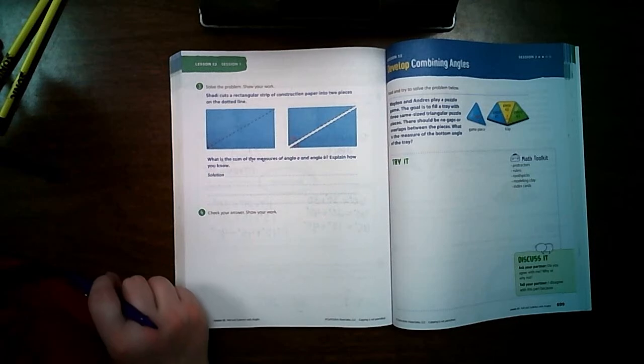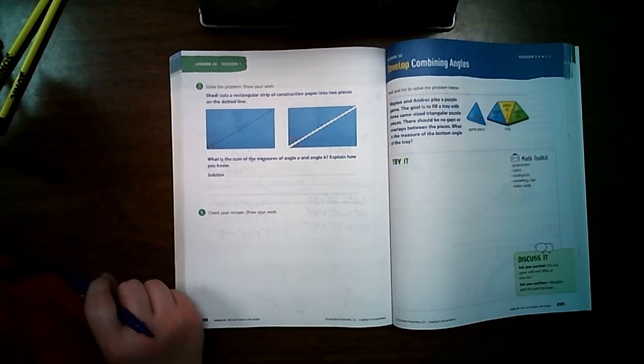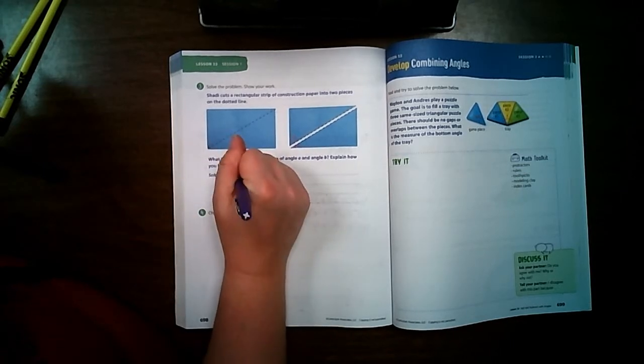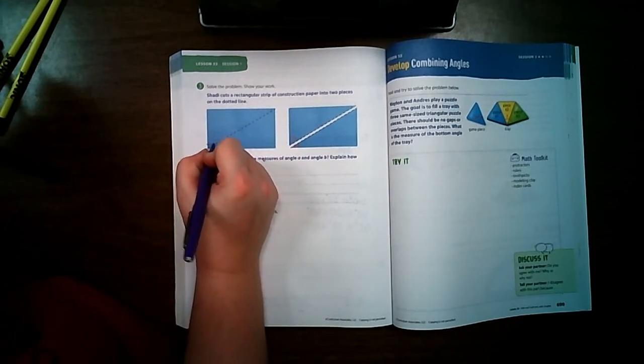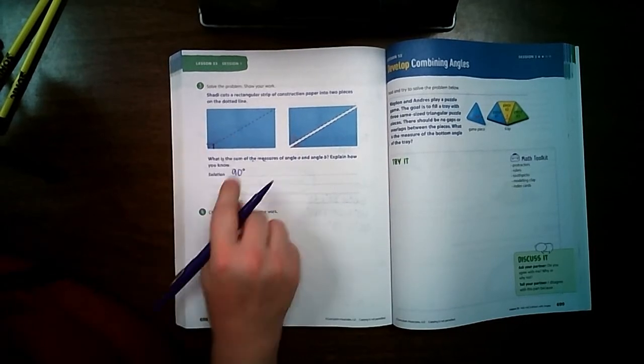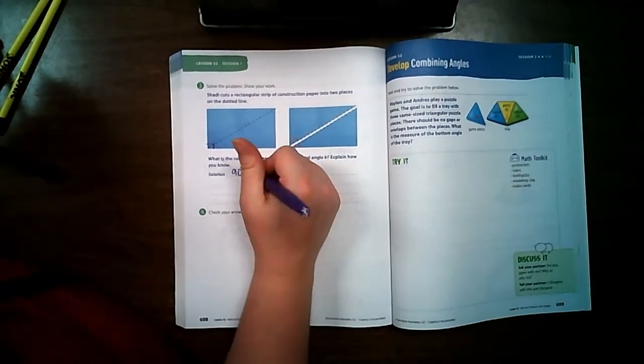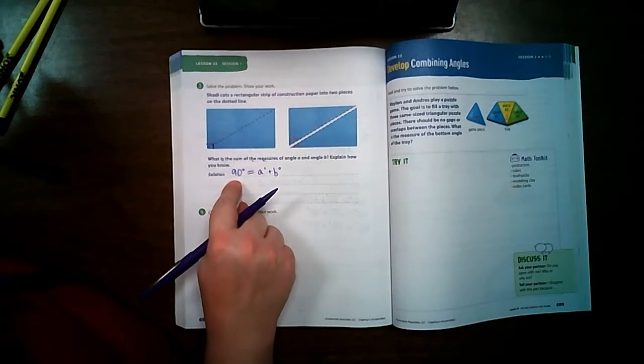Alright, just like the video in the beginning, this right here is going to equal 90 degrees. I know that because this corner is a perfect square corner. So now I just have to find out what angle A and what angle B equals. Because A plus B equals 90 degrees.